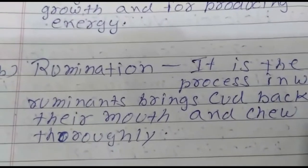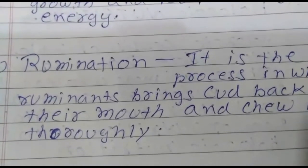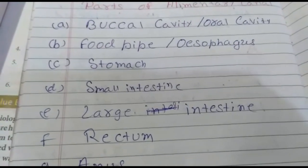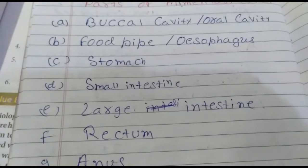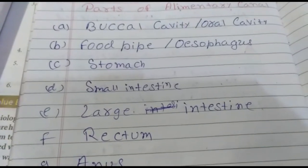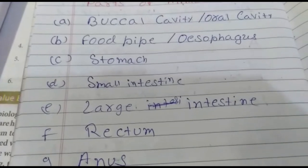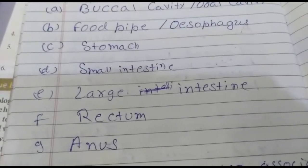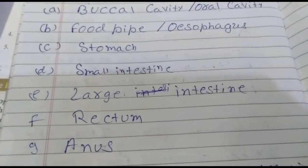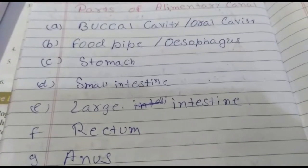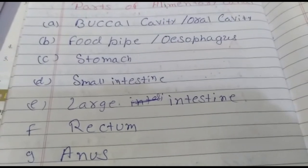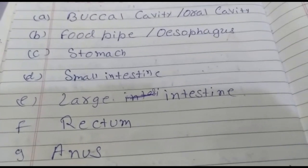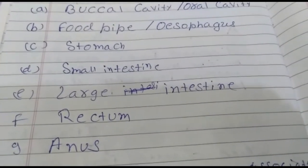Next question: name the organs that make up the human alimentary canal. The organs are: buccal cavity or oral cavity, food pipe or oesophagus, stomach, small intestine, large intestine, rectum, and anus. These are the parts that make up the alimentary canal in the human body.